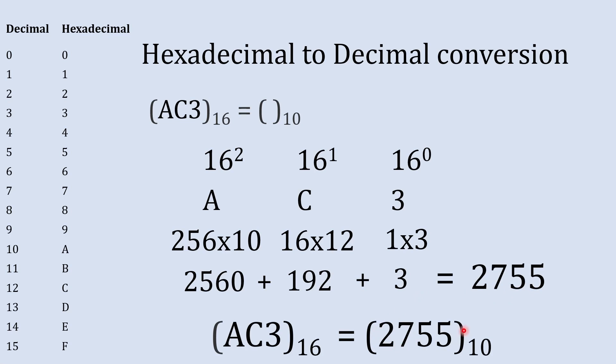So this 2755 is the decimal equivalent to this hexadecimal number and that's how you can convert hexadecimal into decimal number.